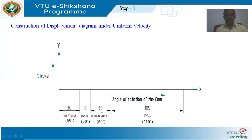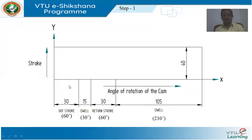Next, 30 mm represents return stroke for 60 degrees, and the remaining 105 mm represents the second dwell for the remaining 210 degrees. Along the y-axis, we take a dimension equal to the stroke, that is 40 millimeters. According to the considered scale it becomes 40 mm. Then close the box — it appears like a rectangle — from 40 mm along y to 360-degree rotation of the cam along x. That is step 2.